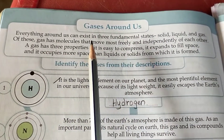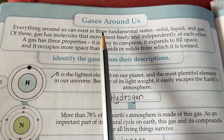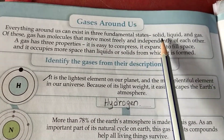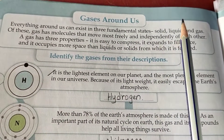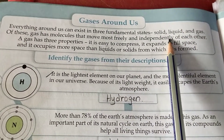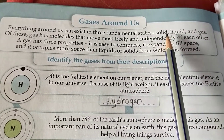Everything around us can exist in 3 fundamental states: Solid, Liquid, and Gas. We have 3 examples of this.